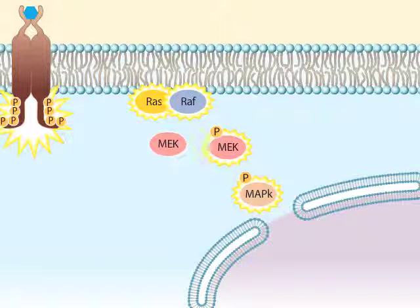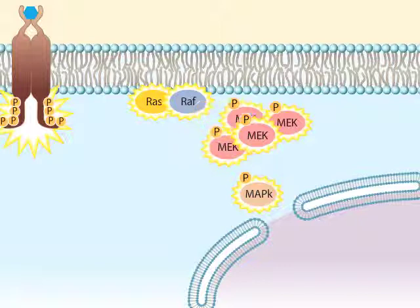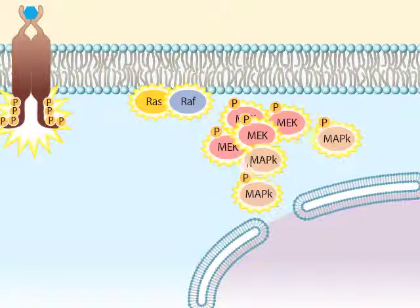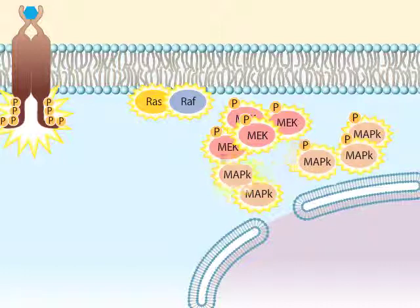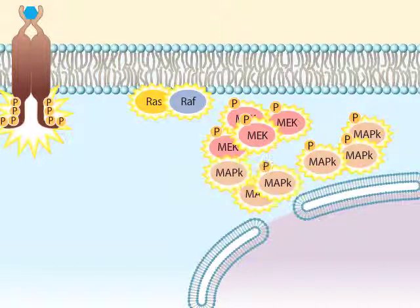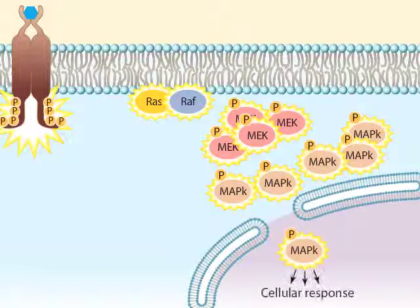At each step in the cascade of events, the signal is amplified because each newly activated protein kinase is an enzyme that can catalyze the phosphorylation of many target proteins. The phosphorylated form of MAP kinase can enter the nucleus and initiate a cellular response, such as cell division.